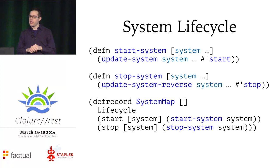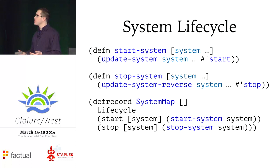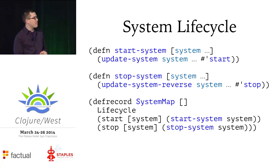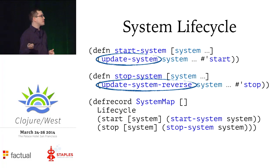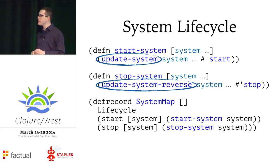If you wanted to make your own lifecycle — some APIs in Java define four lifecycle methods like init, start, stop, and destroy — defining your own is very easy. You just need to provide your own version of system-map, define your lifecycle functions as protocols or multi-methods and implement them on all your components, and then provide your own version of system-map that calls them in the right way. You can make use of two helpers: update-system and update-system-reverse. Update-system takes any arbitrary function and calls it on each component in dependency order while doing the assoc-ing of dependencies. Update-system-reverse does the same in reverse dependency order.